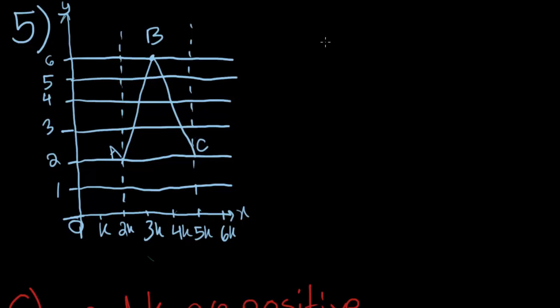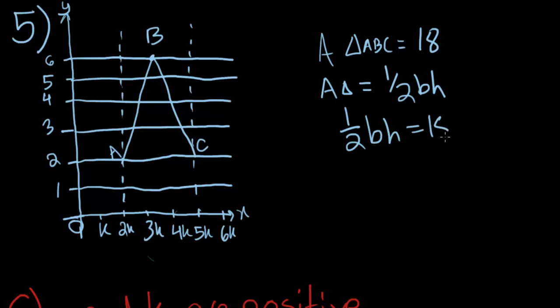The area of triangle ABC is equal to 18. The area of a triangle, if you remember, is half base times height, or half height times base, whichever one you prefer. So half base times height is equal to 18. If we divide by half, we'll get base times height is equal to 36.